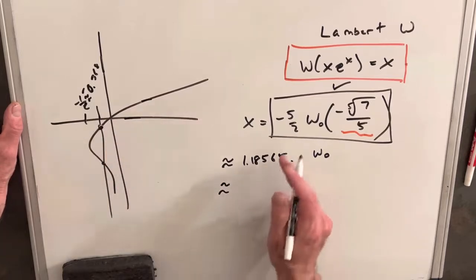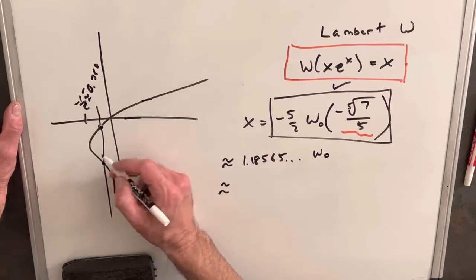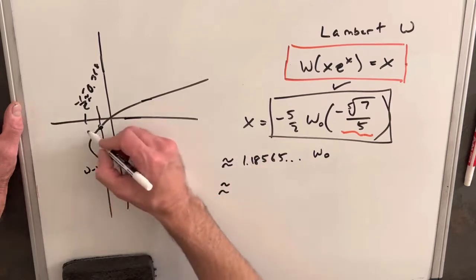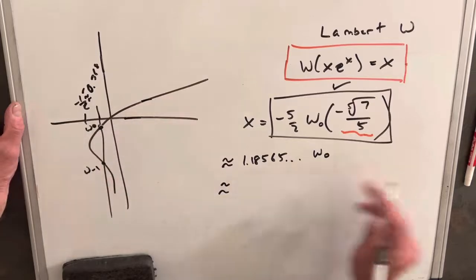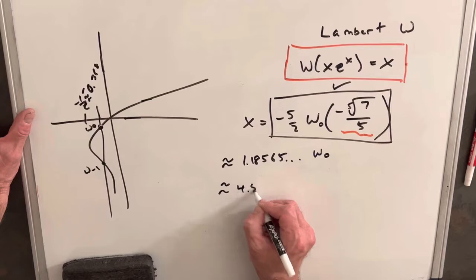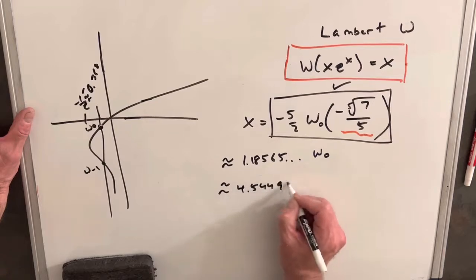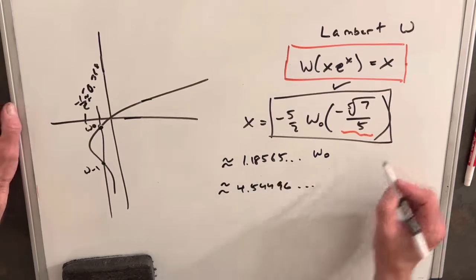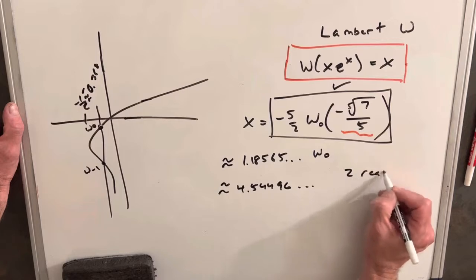But then also we could look at our second value. This is on the negative 1 branch. So if we look that up, we get a value of 4.54496. So we're going to have two real solutions.